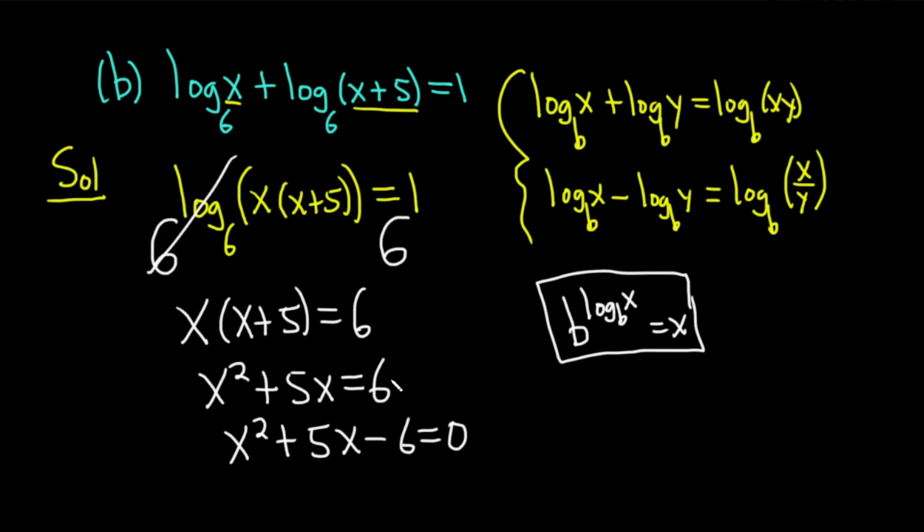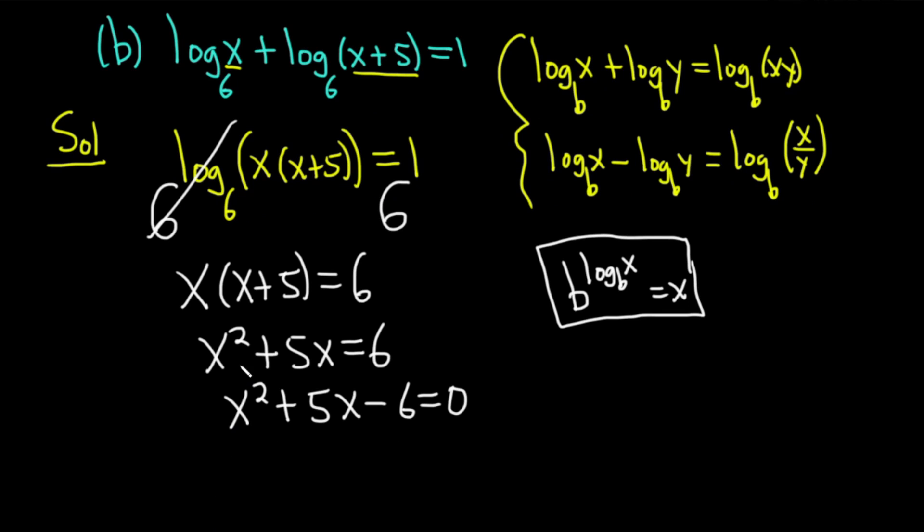We should be able to factor this. So parentheses x, parentheses x, and it's equal to 0. We need two numbers that multiply to negative 6 and add to 5. So I'm thinking plus 6 minus 1. That might work. 6 times negative 1 is negative 6, and 6 plus negative 1 is 5. Yeah, that works.